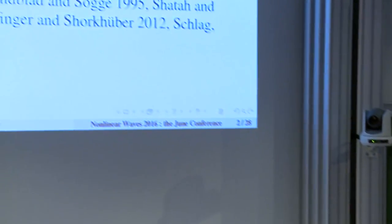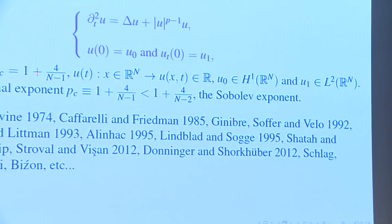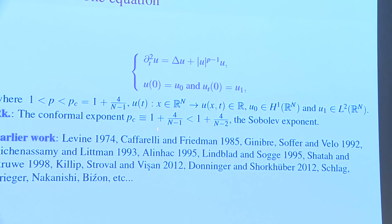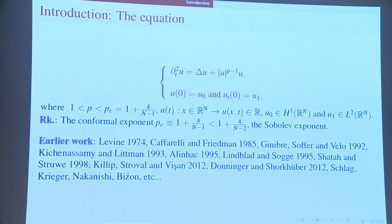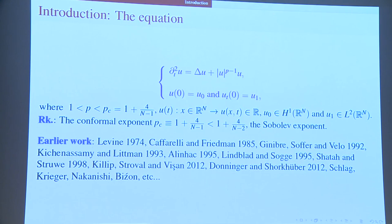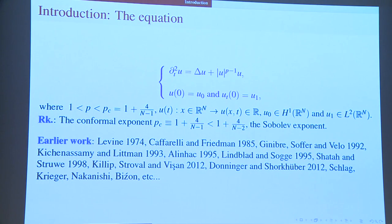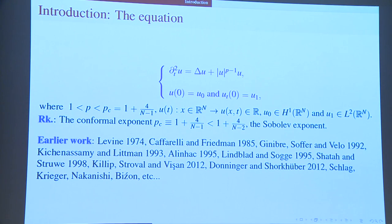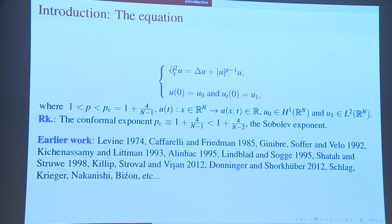We have the semi-linear wave equation in two space dimensions. The non-linearity is u to the p, where p is subconformal. Here p is less than 5 because most of the time I will be in two dimensions. I will talk first about the one-dimensional case, which is very well understood, but then I will focus on the 2D case.